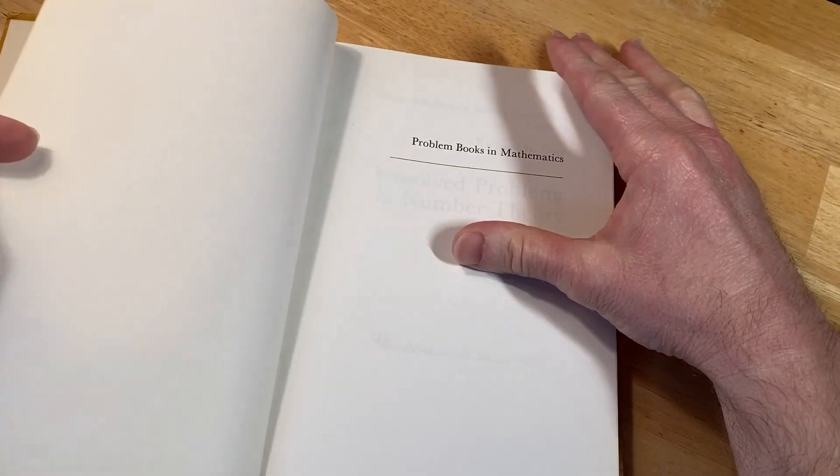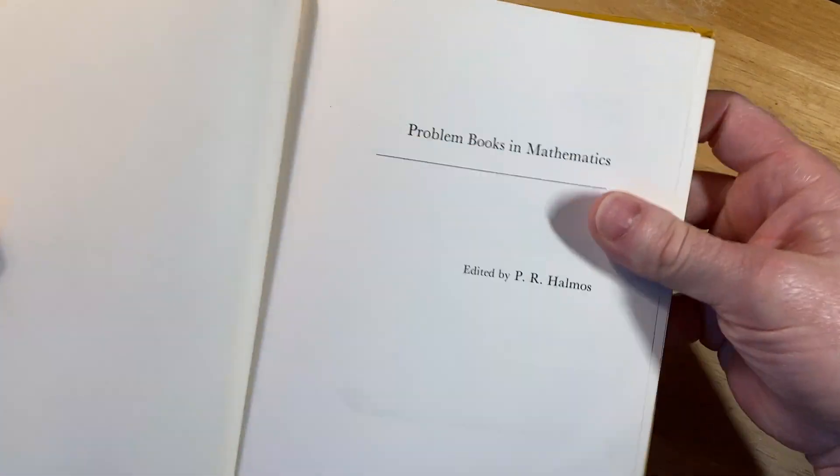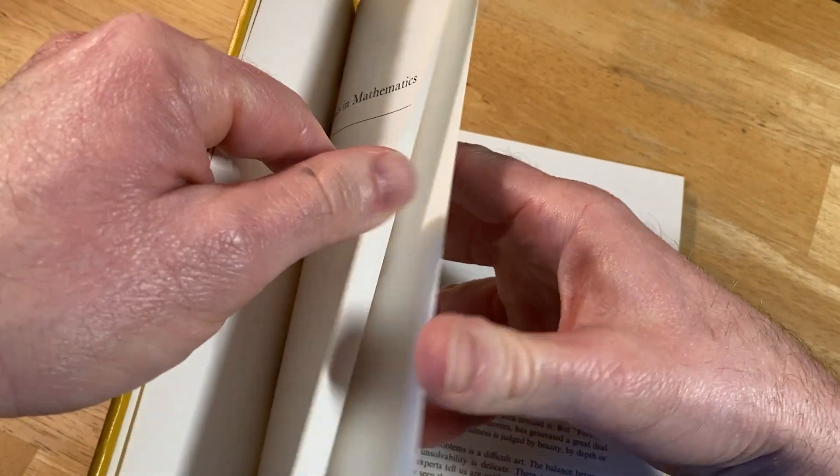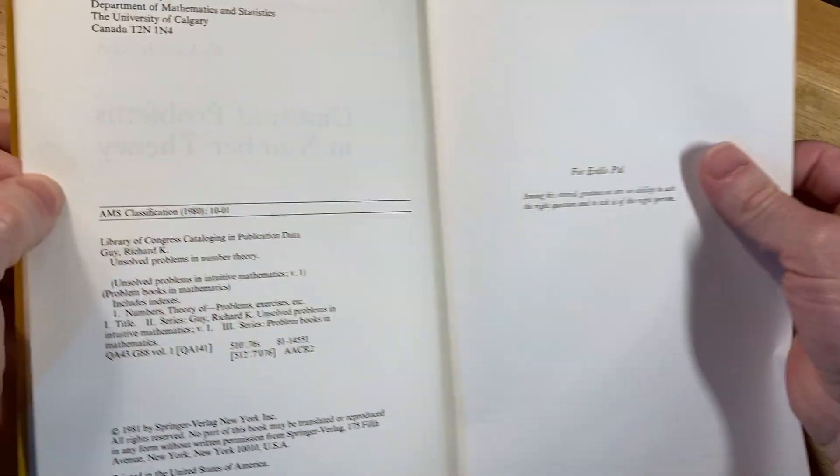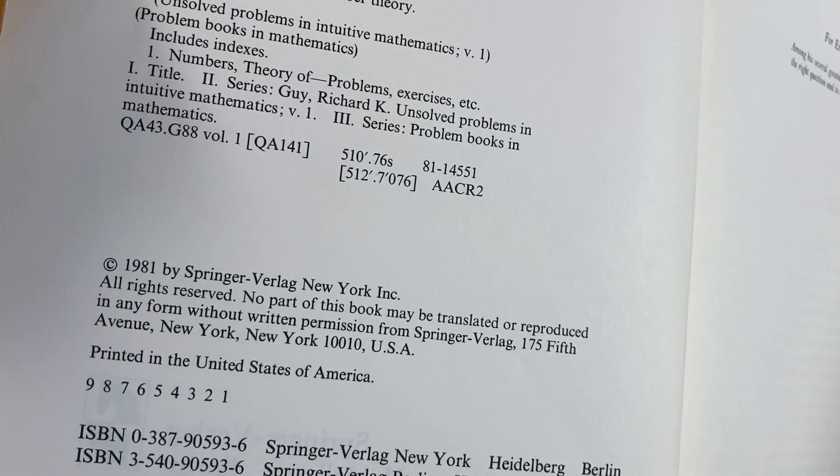Let's take a look. Problem Books in Mathematics. Edited by P.R. Halmos. Paul Halmos. And here's the copyright. 1981, Springer Verlag, New York.